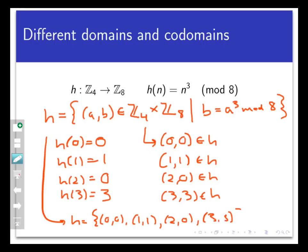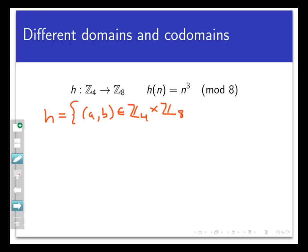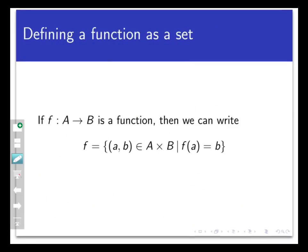So in general, if f maps A to B as a function, then we can represent f as a set of ordered pairs by setting f equal to the set of all pairs a, b that belong to A cross B, such that b, the second coordinate, equals f of a, the first coordinate. Here I'm mixing my symbols here. This f on the right here is a function that maybe is given to me as a formula, and now I'm using the same letter f to represent the set of ordered pairs.